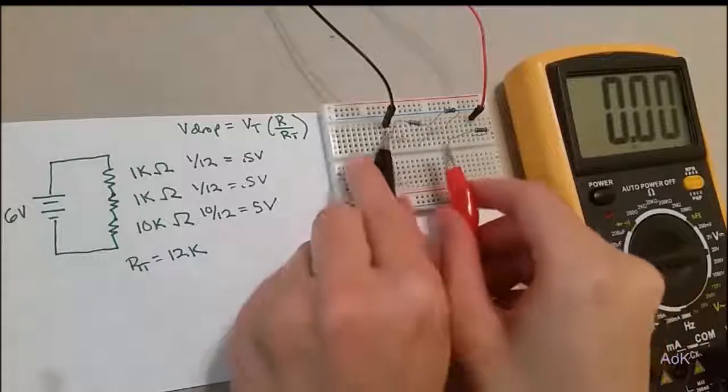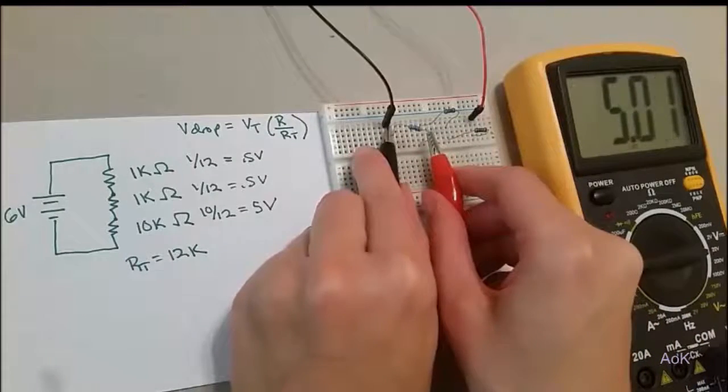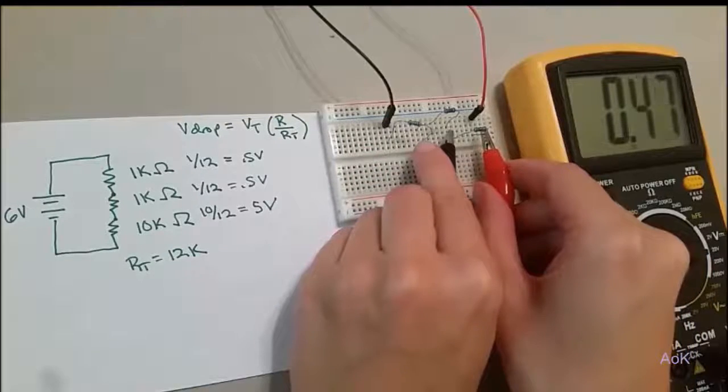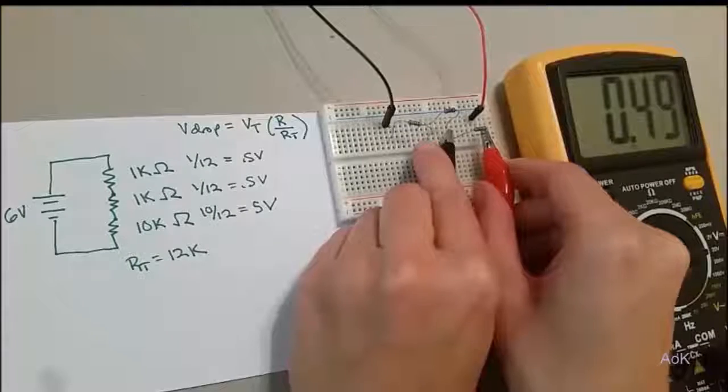The multimeter confirms our calculations that the 10k resistor has a 5 volt drop, while the 1k resistor only has a half a volt drop.